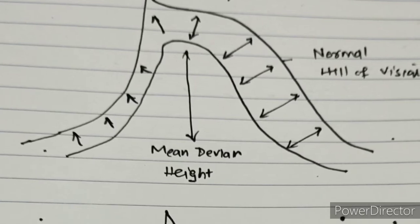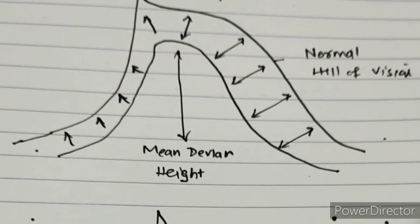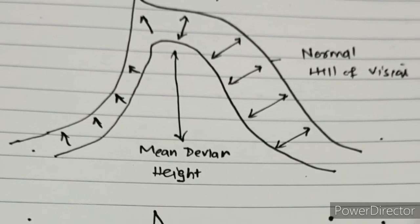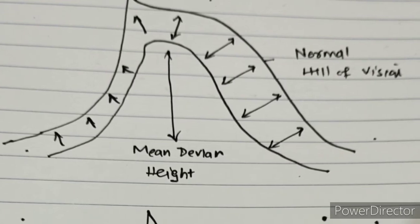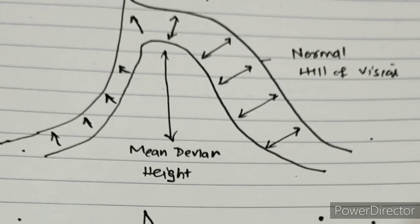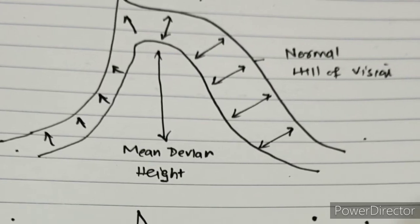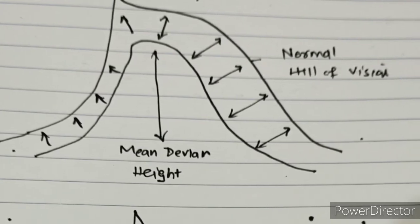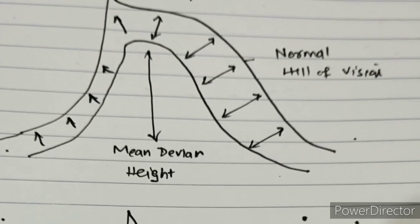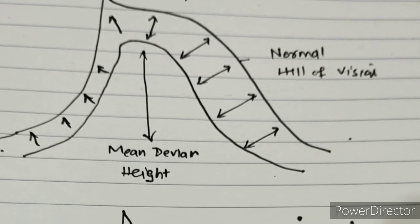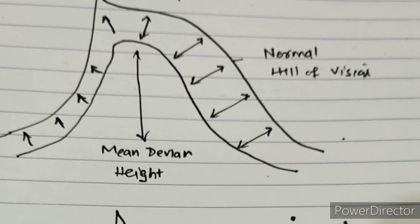Now comes the mean deviation. For mean deviation, we plot a normal hill of vision and then plot our patient's tested hill of vision, and we measure the difference between the two. Then take the mean value of all differences added, divided by the total number of points tested, and we get our mean deviation. It gives us impression of height of hill of vision. It should be within six, less than six. Between six and twelve, moderate visual field defects, and above 12, severe defects.